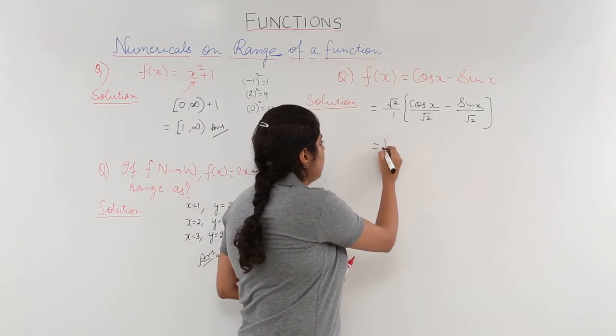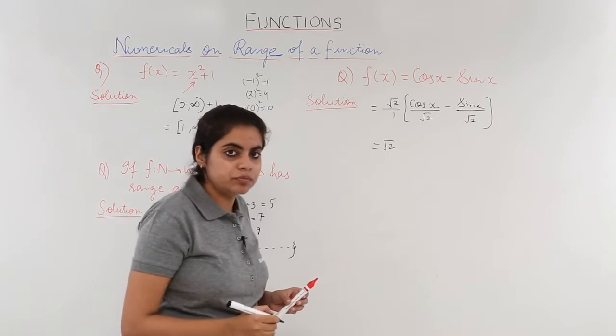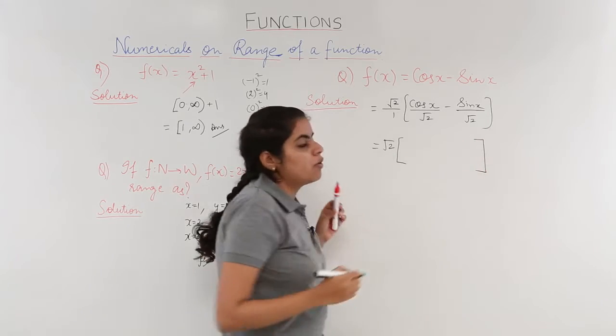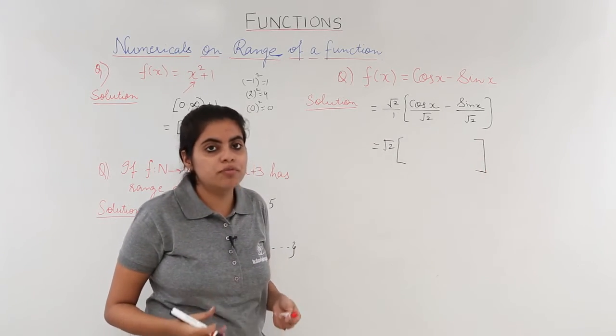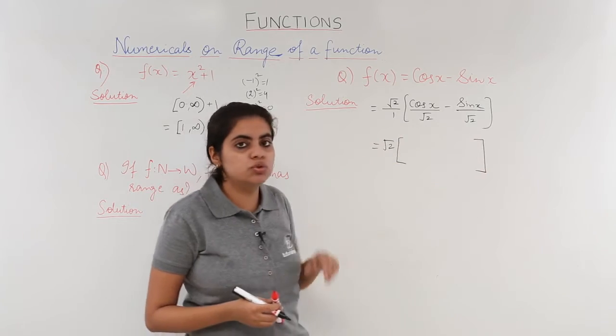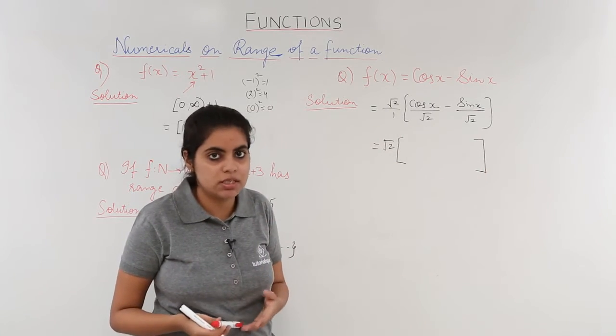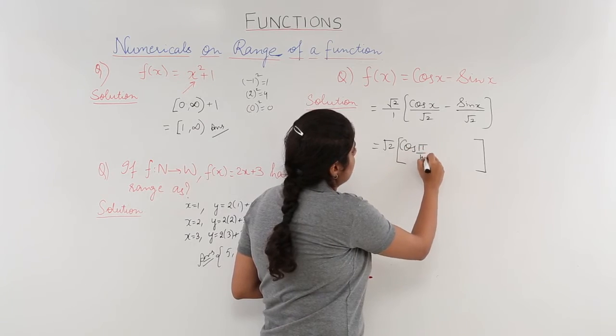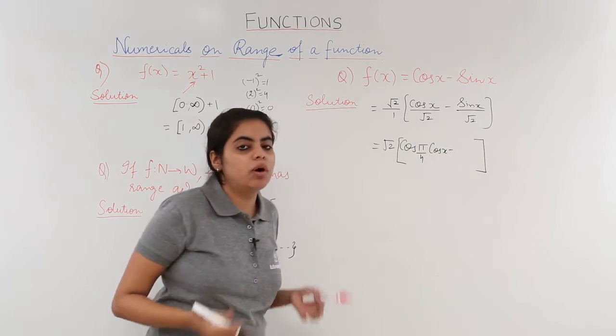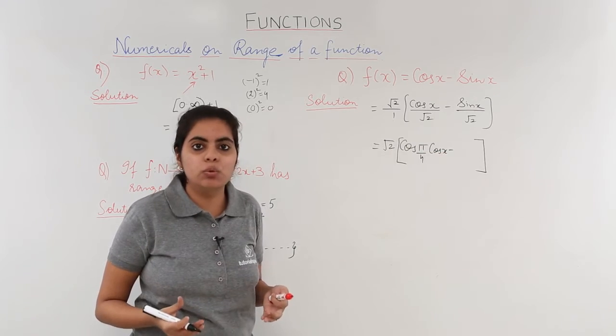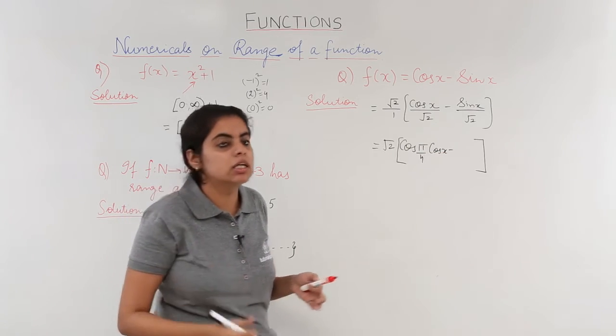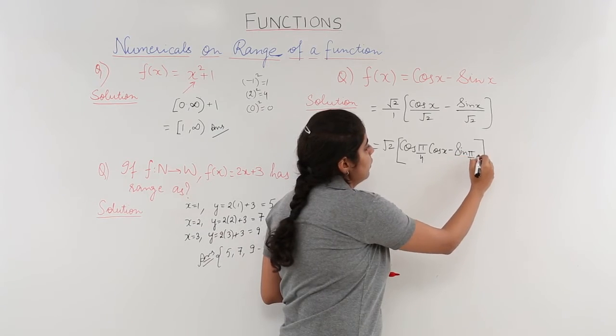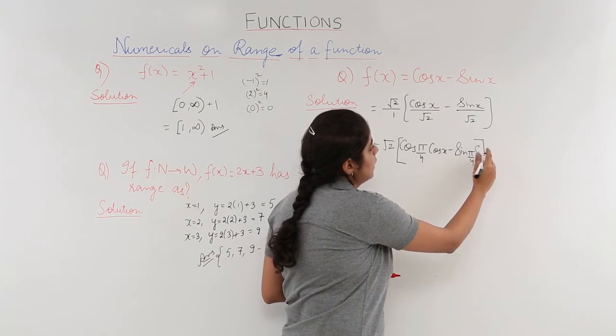Now root 2 upon 1 means root 2. Cos x upon root 2 and sin x upon root 2. What value of cos gives me 1 by root 2? Which is cos 45 degrees. So cos pi by 4, cos x. Similarly what value of sin would give me root 2 in denominator? It would be sin 45. So it is sin pi by 4 into sin of x.